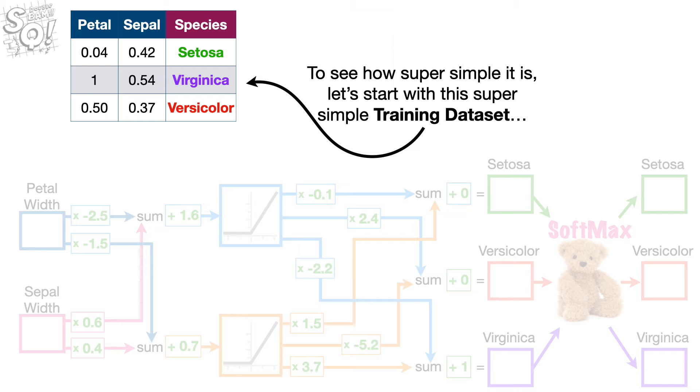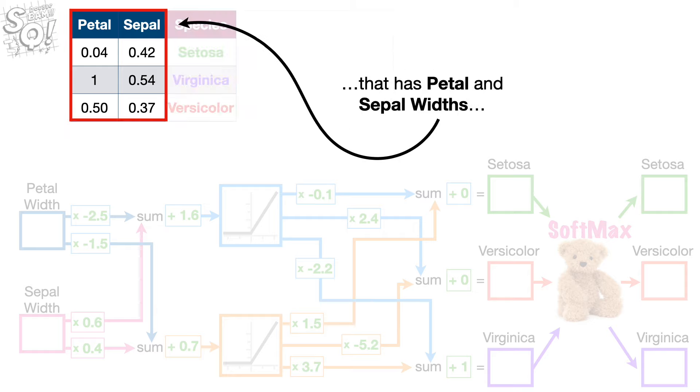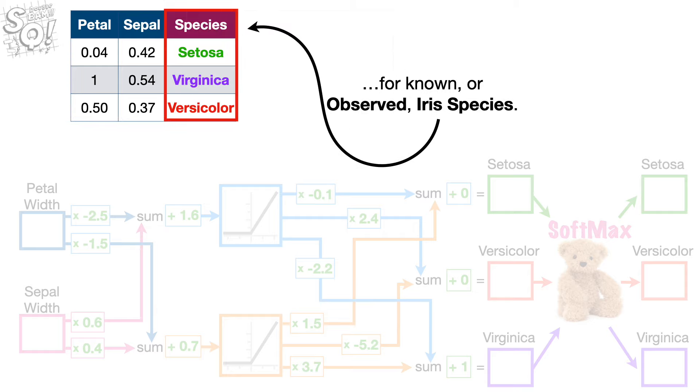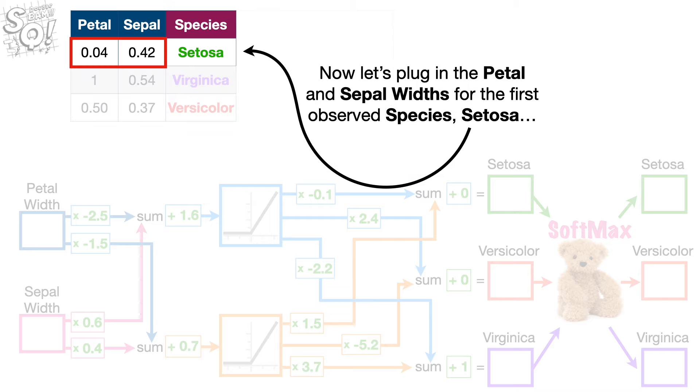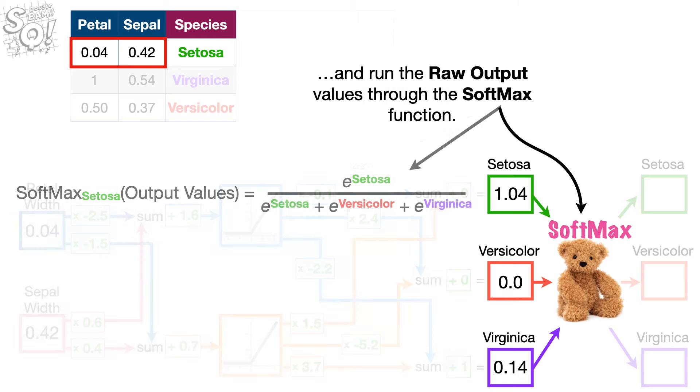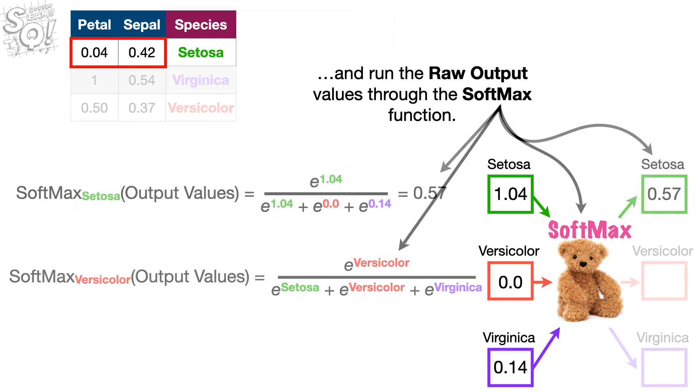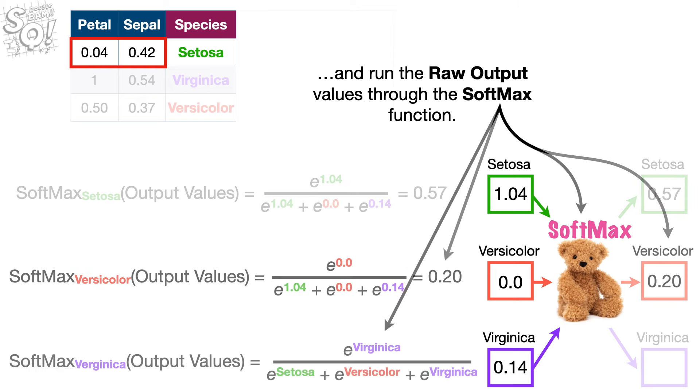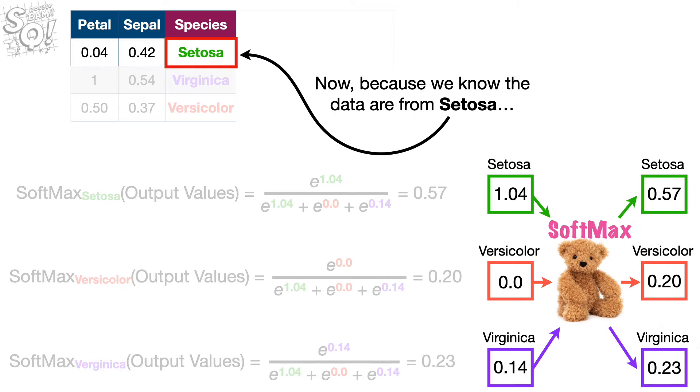let's start with this super simple training data set that has petal and sepal widths for known or observed iris species. Now let's plug in the petal and sepal widths for the first observed species, Setosa, and run the numbers through the neural network, and run the raw output values through the SoftMax function.